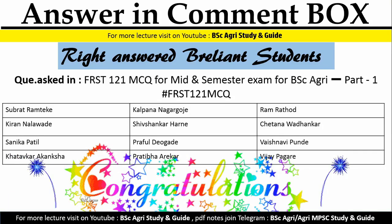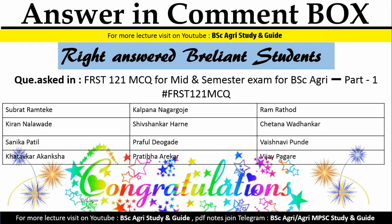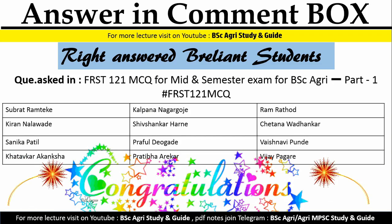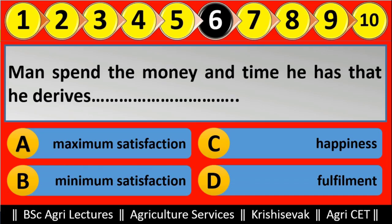Congratulations to the brilliant students. Now question number six: Man spends the money and time he has so that he derives dash dash. Options are: maximum satisfaction, minimum satisfaction, happiness, fulfillment.